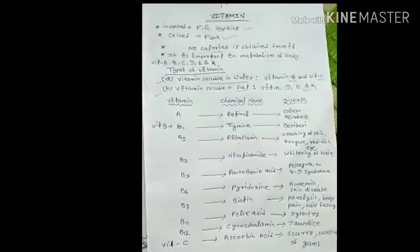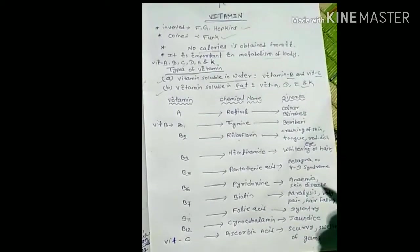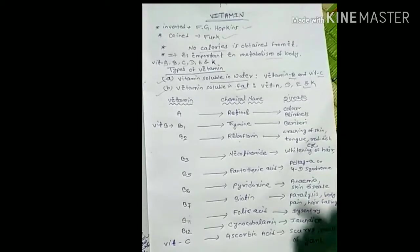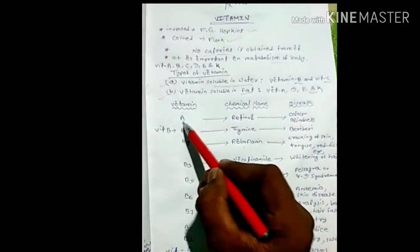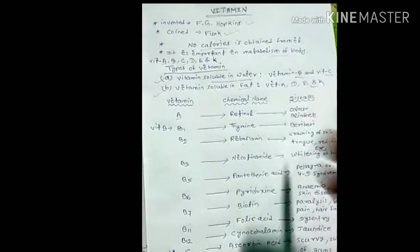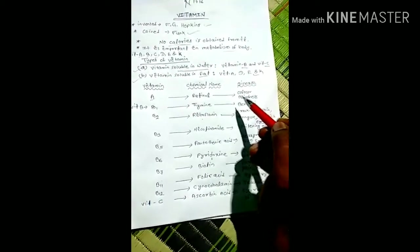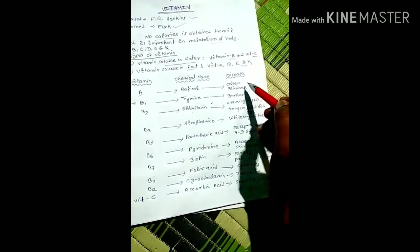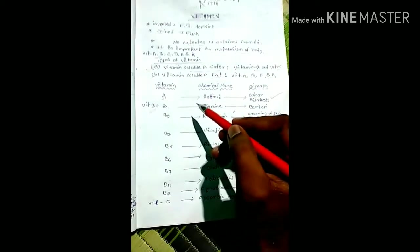Now let's discuss the chemical names and deficiency diseases of these vitamins. First, vitamin A - the chemical name of vitamin A is retinol, and the deficiency of vitamin A causes colorblindness.